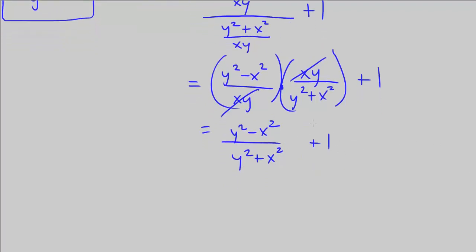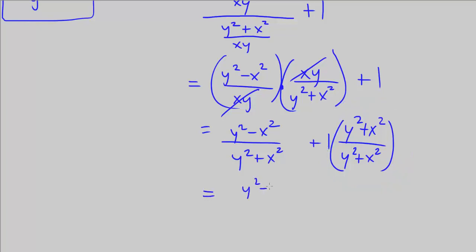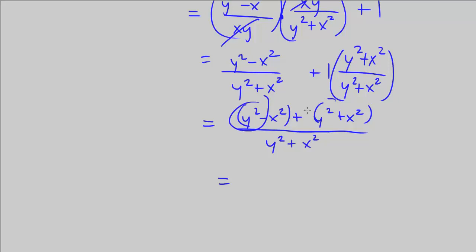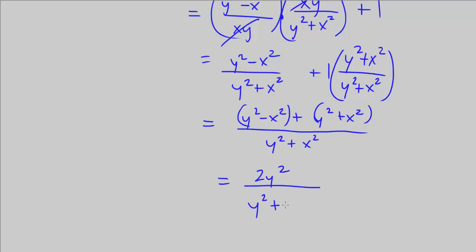We still have this plus 1, so this is not yet a single fraction. To add this 1 to the fraction, we need a common denominator of y squared plus x squared. We multiply 1 by y squared plus x squared over y squared plus x squared, which doesn't change the value. So we have y squared minus x squared plus y squared plus x squared, all over y squared plus x squared. Adding like terms: y squared and y squared give 2y squared, and negative x squared and x squared cancel out. So we have 2y squared over y squared plus x squared.